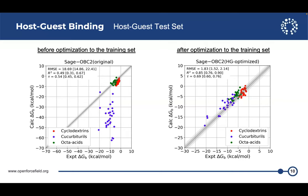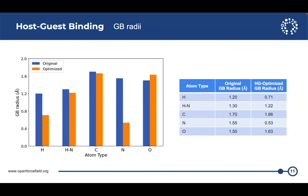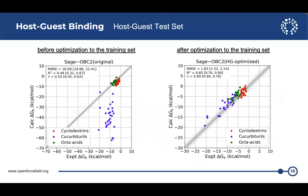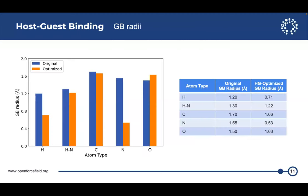Now if we look at what changed in terms of the parameters, I'm showing you the GB radii before and after optimization. Most of it, three of them are minor changes. And the biggest change is with hydrogen and nitrogen. So nitrogen dropped from 1.55 angstrom to about 0.53 angstrom. This is very unphysical. But if you look at the results again, most of the host guest complexes that contain a nitrogen atom are the cucurbiturals. And since those are the most overbinding results, these systems are driving the optimization.